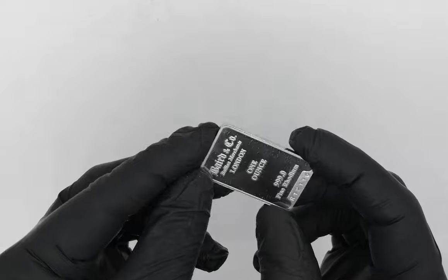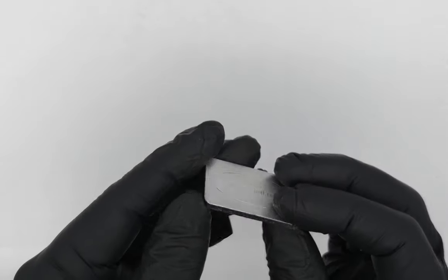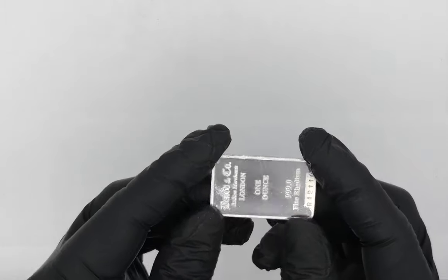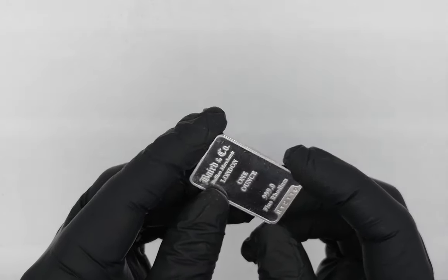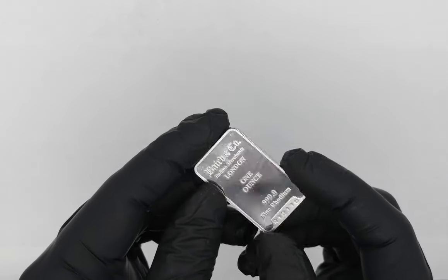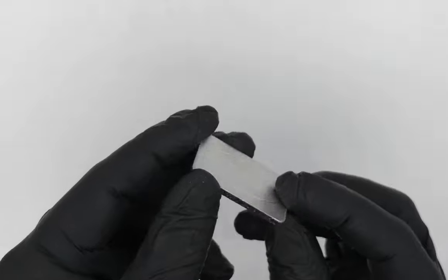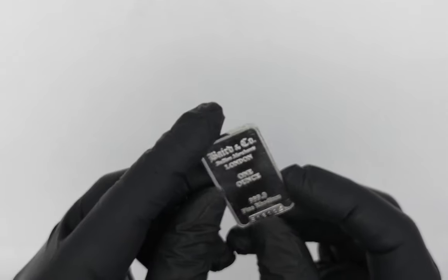And then we just resell it by the gram. We'll take these ounce bars and chop them up into tiny little pieces with a machine and sell it by the gram usually, since we don't really deal with ounces. As a science company, we don't really use imperial units that much.